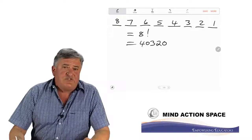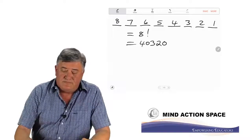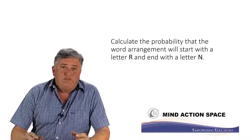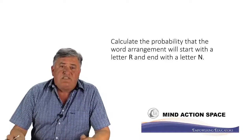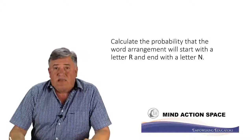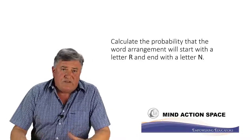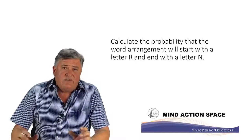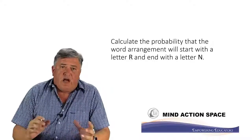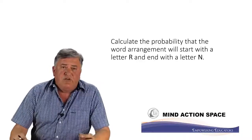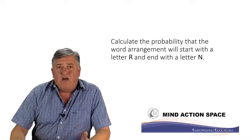In the second part of our question, they're going to ask us for a restriction. So let's look at what this question says. It is the same word, the same eight letters. They now ask us to find — calculate the probability that the word arrangement will start with the letter R and end with the letter N. To calculate this, we need to calculate the number of ways first before we can find the probability.